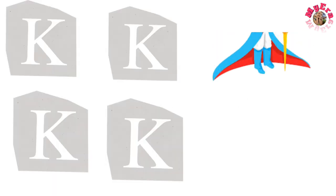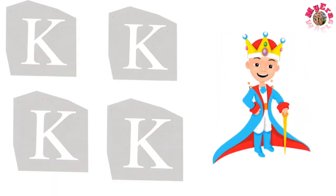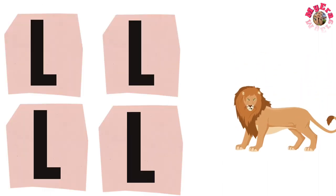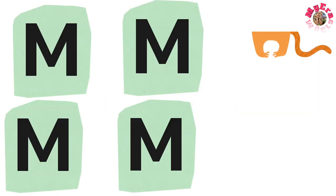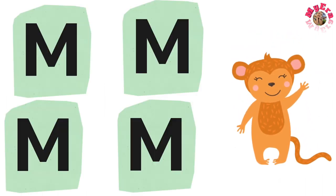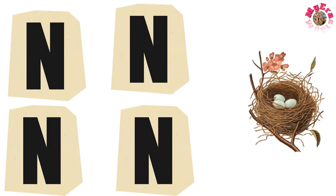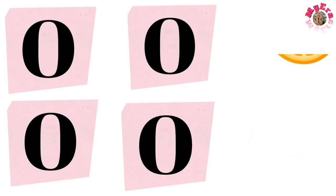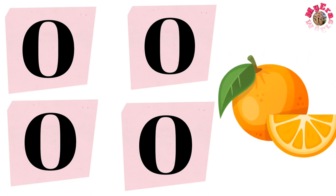K for king, L for lion, M for monkey, N for nest, O for orange.